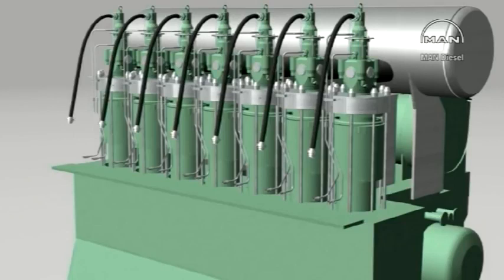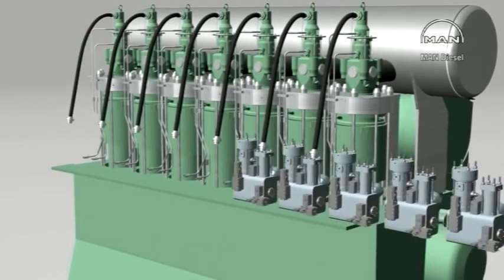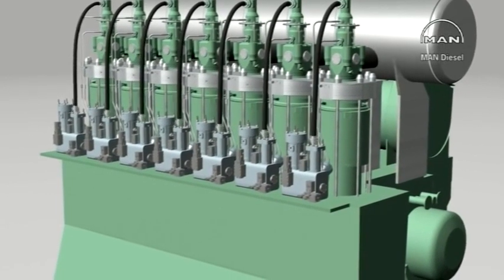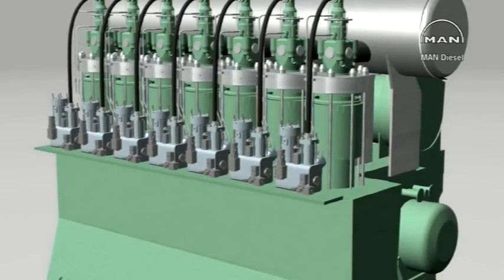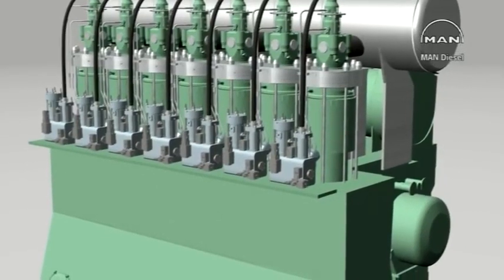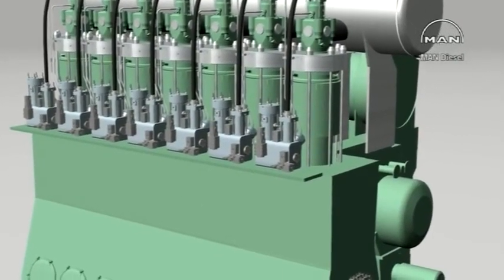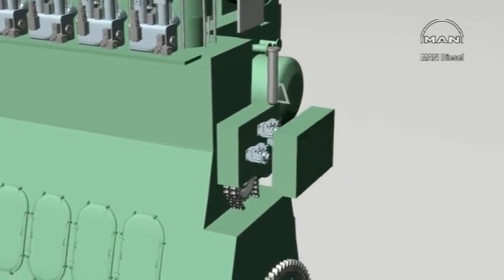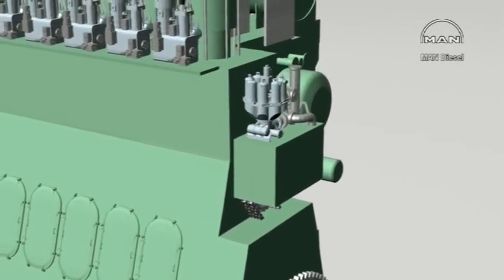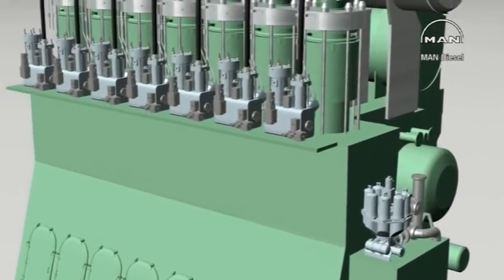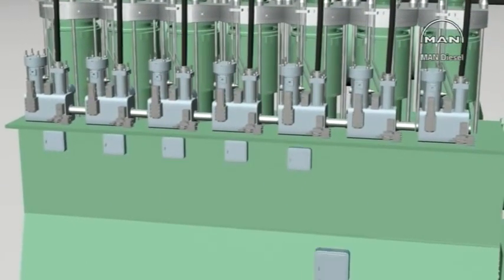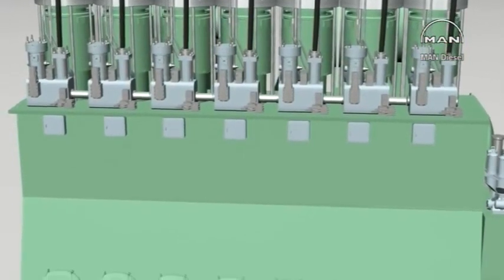The new electro-hydraulic control system of the ME engine comprises HCU hydraulic cylinder unit including FEVA fuel injection valve, fuel oil pressure booster, exhaust valve actuator, and electronically controlled alpha lubricator. HPS hydraulic power supply unit. Control units forming the complete engine control system.